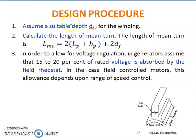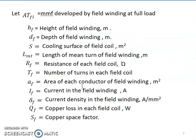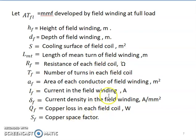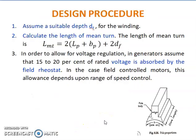Before discussing the design procedure, let us define the standard notations used: ATfl is the MMF developed by field winding at full load; Hf is height of field winding in meters; Df is depth of field winding in meters; S is cooling surface of field coil in square meters; Lmt is length of mean turn in meters; Rf is resistance of each field coil in ohms; Tf is number of turns in each field coil; Af is area of each conductor in square meters; If is field current in amps; delta-f is current density in ampere per mm²; Qf is copper loss in each field coil in watts; and Sf is copper space factor.